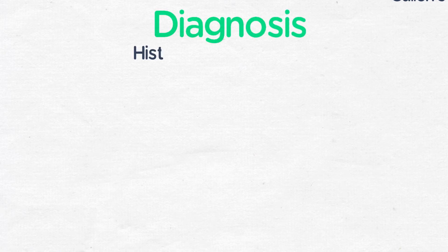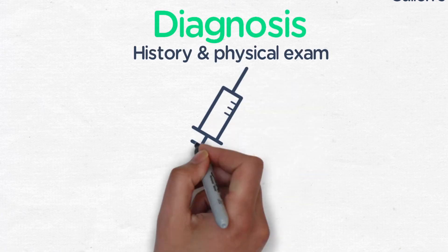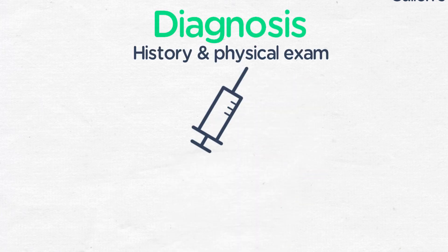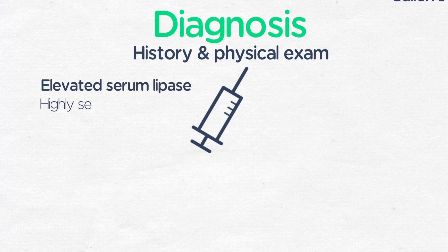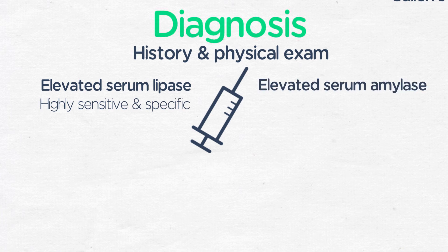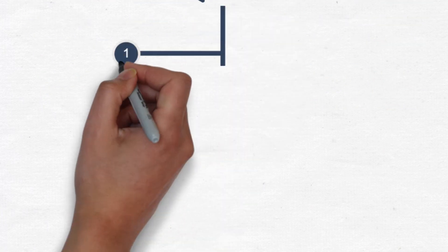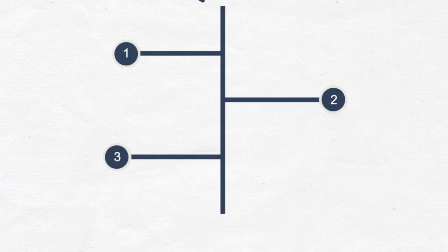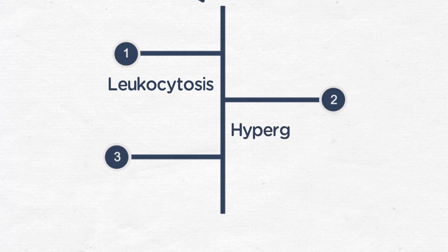Acute pancreatitis is diagnosed based on history, physical exam, and the detection of elevated levels of serum pancreatic enzymes. Serum lipase is highly sensitive and specific for pancreatitis, while elevated amylase is sensitive but is not as specific. Additional laboratory findings may include leukocytosis, or an elevated peripheral white blood cell count, as well as hypoglycemia due to reduced insulin release with acute pancreatitis.